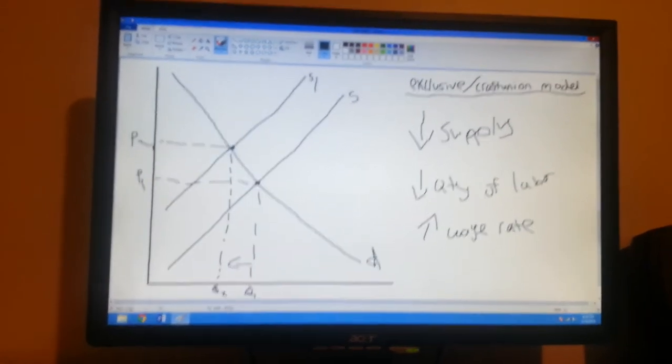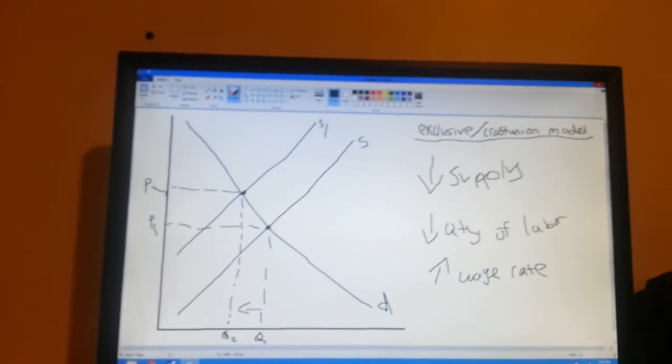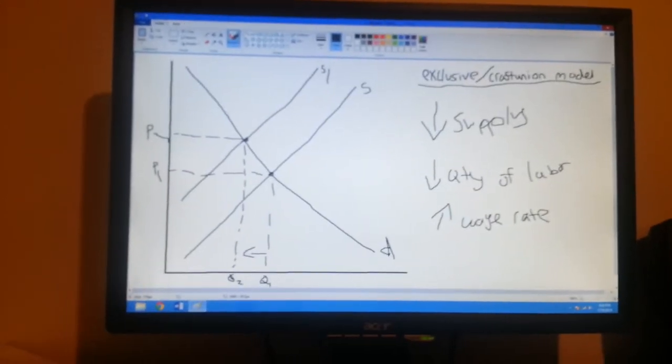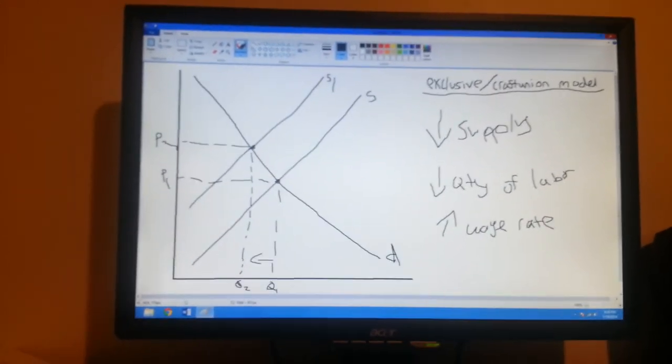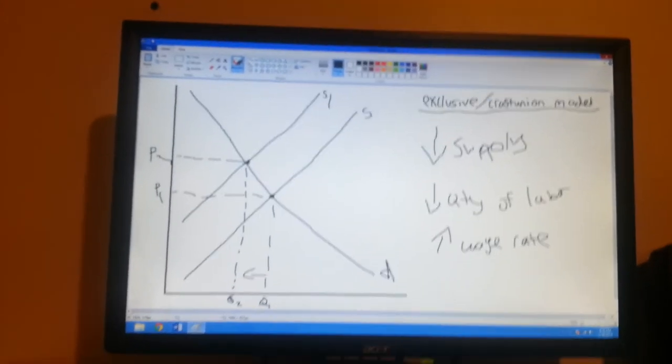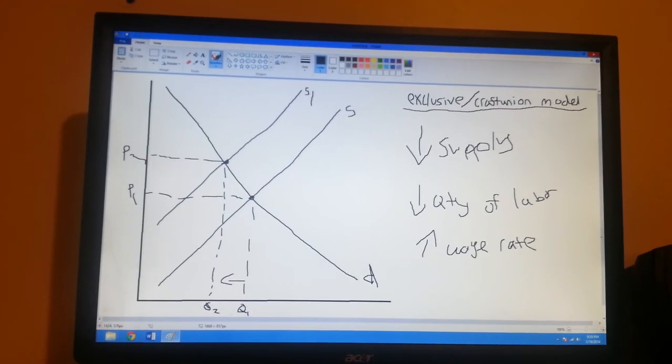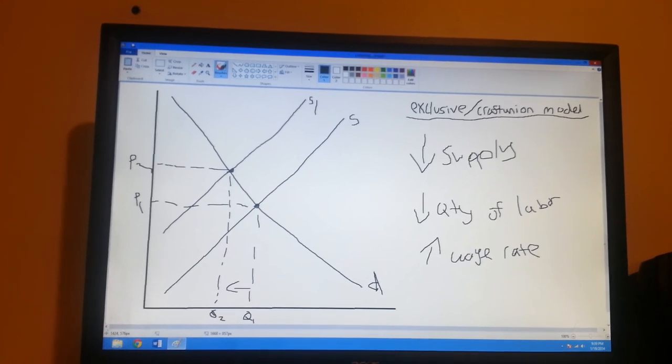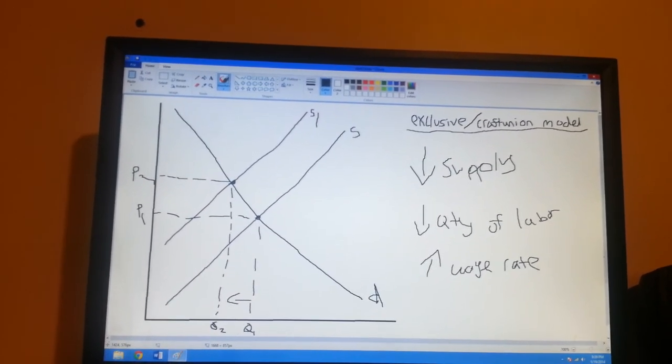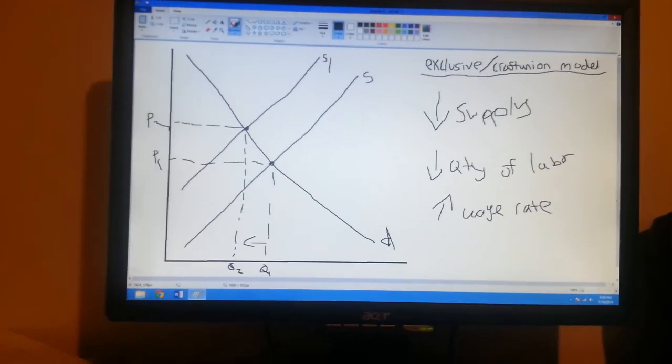Another place where this type of union is common is when there is a job that requires licensing, such as doctors, lawyers, teachers. Unions force the government to require licensing to enter the occupation. So if workers can't meet the requirements, they can't join the industry, which as a result restricts the supply as well.